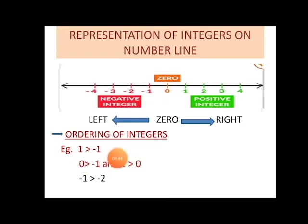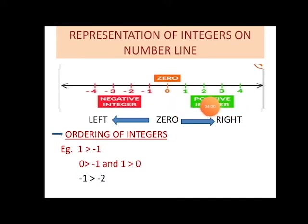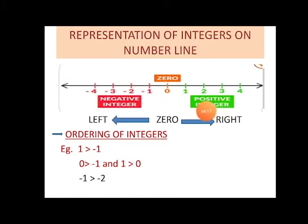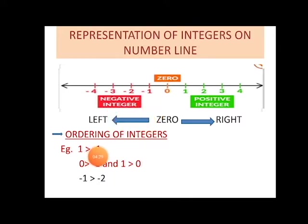Let's understand the ordering of integers. When we take one and minus one and compare them on the number line, numbers to the right of zero represent positive numbers whose values increase as we move right, whereas moving left the values of negative numbers reduce. So when we compare any positive number with a negative number, the positive number is always greater.